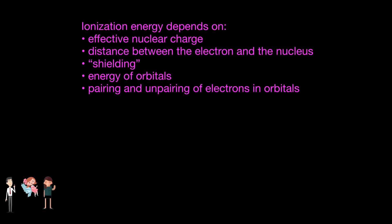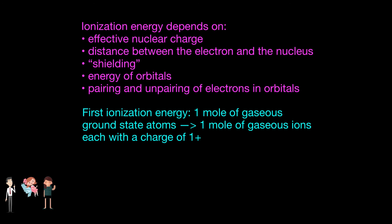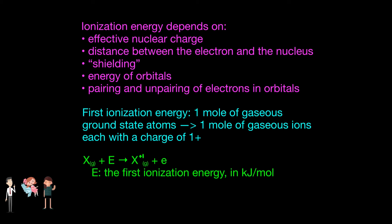Ionization energy depends on effective nuclear charge, distance between the electron and the nucleus, shielding produced by lower energy levels, and the pairing and unpairing of electrons in orbitals. The first ionization energy is the energy required to remove the most loosely held electron from one mole of gaseous atoms to produce one mole of gaseous atoms each with a charge of 1+. They are measured in kilojoules per mole, and vary in size from 381 — which is considered very low — up to 2370, which is very high.